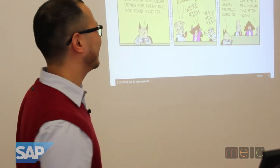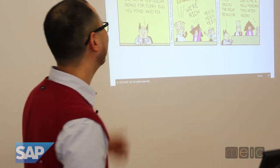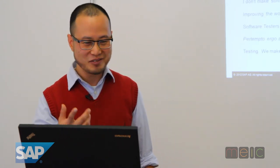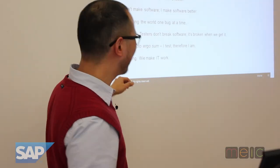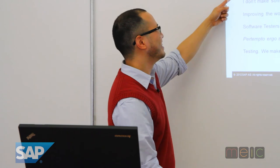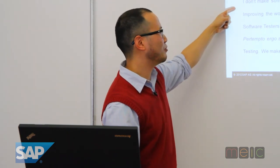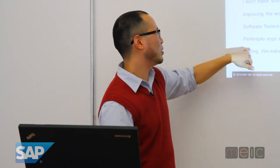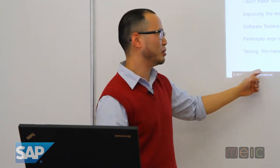How can you do a software slide without Dilbert? The idea here is, 'our goal is to write bug-free software. I'll pay $10 bonus for every bug you find and fix.' And these guys are going, 'we're rich!' - 'I hope this drives the right behavior' - 'I'm going to write me a new minivan now.' There's also a list of tester bumper stickers: 'my other car is a bug,' 'if your software works, thank a tester,' 'I don't make software, I make software better,' 'improving the world one bug at a time,' 'software testers don't break software, it's broken when we get it,' and 'in testing, we make IT work.'